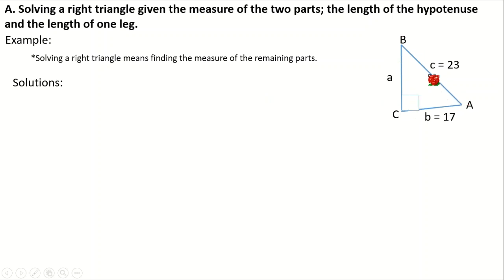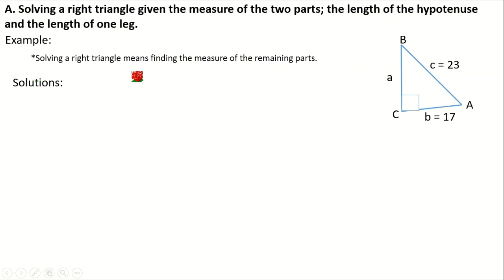The hypotenuse is given — it's the side opposite the 90-degree angle — and one leg is also given. So the length of the hypotenuse and the length of one leg are our given values. Solving a right triangle means finding the measure of the remaining parts, so we need to find the measure of angle B, angle A, and leg A.